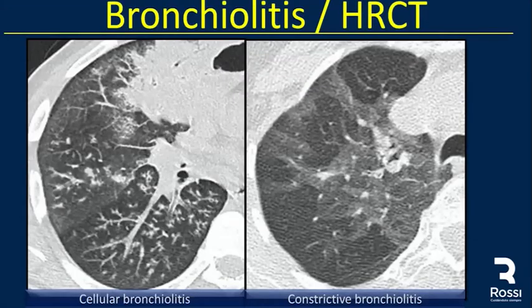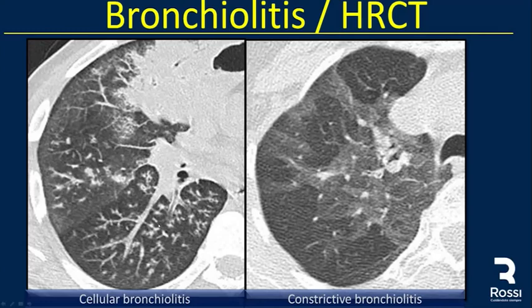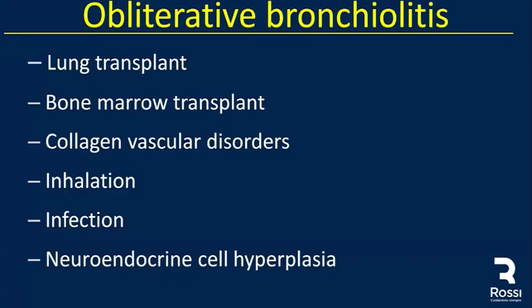We have two main categories: direct signs and indirect signs. In cellular bronchiolitis, direct signs include centrilobular nodules with tree-in-bud pattern, which can be due to infection. In constrictive bronchiolitis, we see areas of diminished attenuation with vasoconstriction, diminished vascularity, and areas of collapsed normal lung. Main causes include lung transplant, bone marrow transplant, collagen vascular disease, inhalation, infection, and neuroendocrine cell hyperplasia.